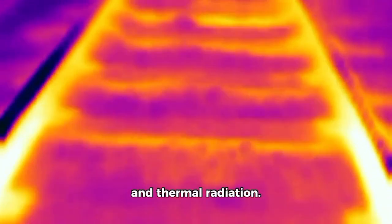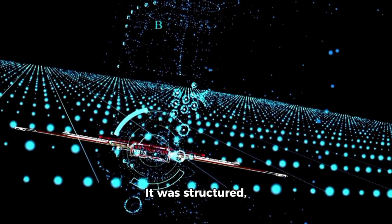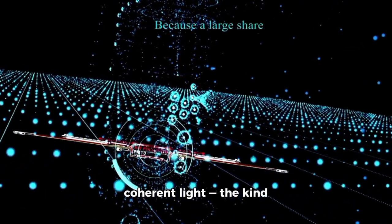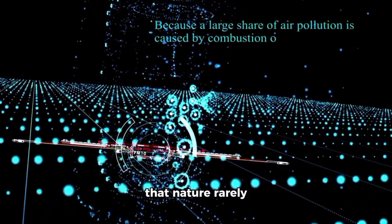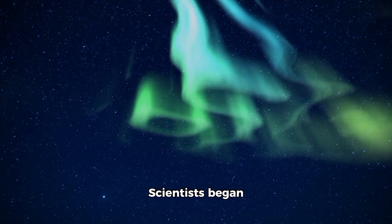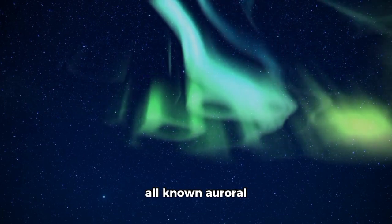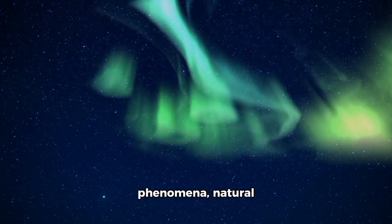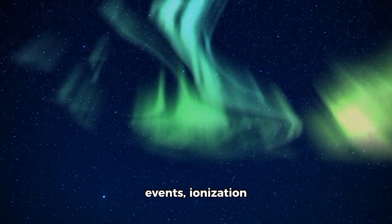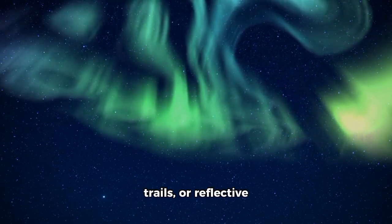It lacked both reflection and thermal radiation. It was structured, coherent light, the kind that nature rarely produces without assistance. Scientists began comparing the data to all known auroral phenomena, natural emissions, outgassing events, ionization trails, or reflective glints from tumbling surfaces.